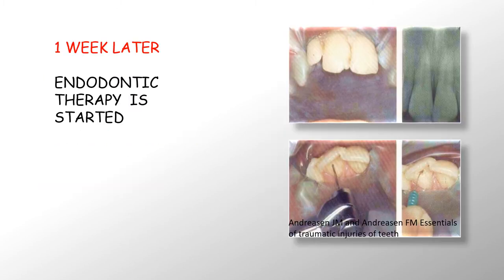After splinting, a radiograph is taken to assess the position of the tooth in the socket. You can see that the tooth is very well positioned. You can also observe that this is a mature tooth and root formation is completed. Therefore, the diameter of the apical foramen is less than 1 mm, and the chances of pulp revascularization are very less.